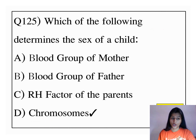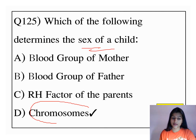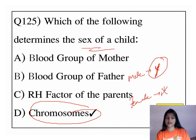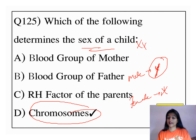Which of the following determines the sex of a child? Chromosomes determine whether a child will be male or female. The father has the Y chromosome and the mother has the X chromosome. If XX is formed, then it's a girl child. If XY is formed, then it's a boy child.